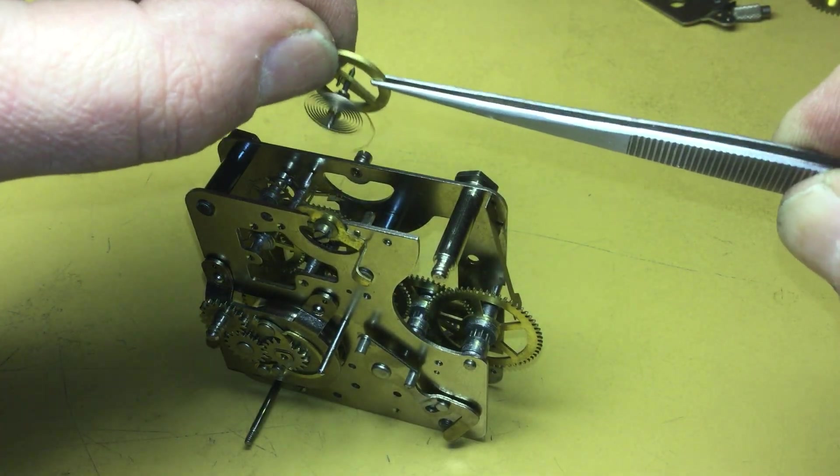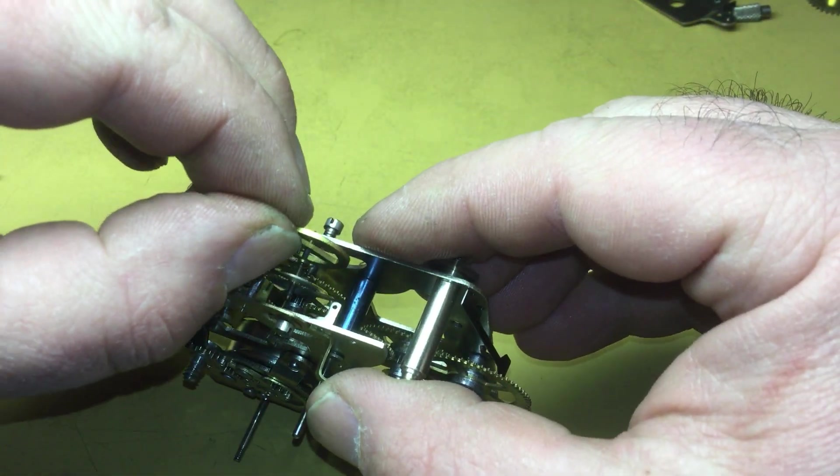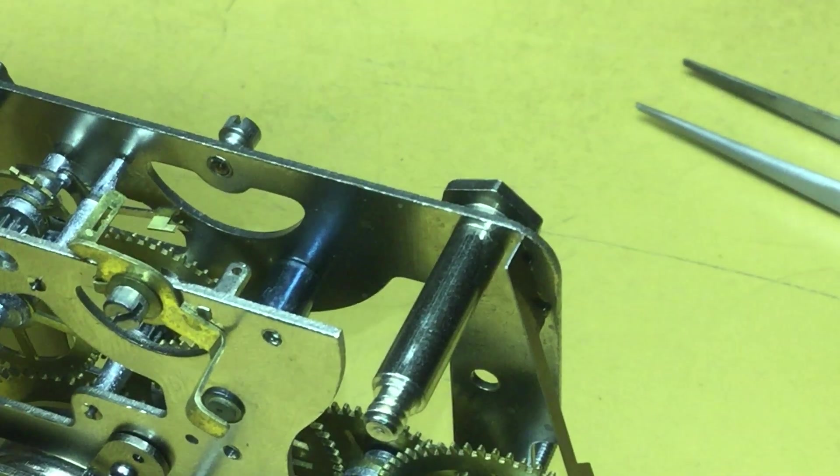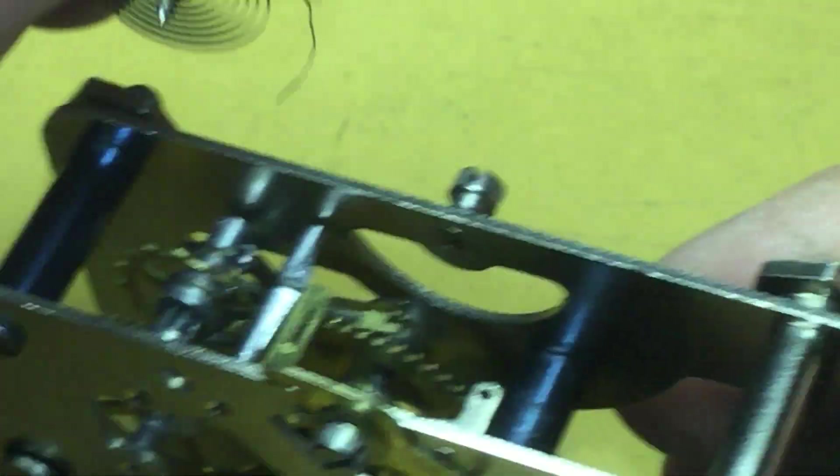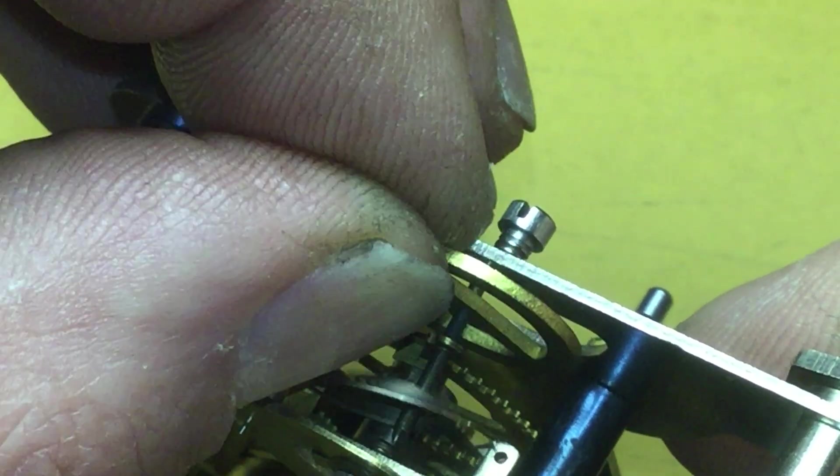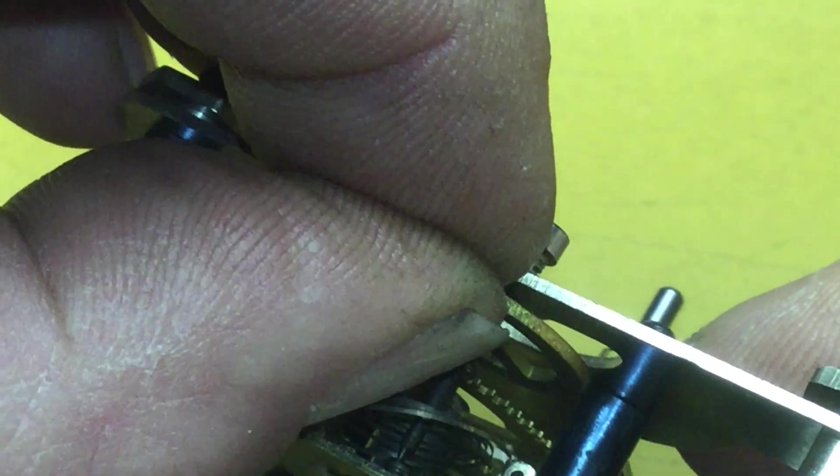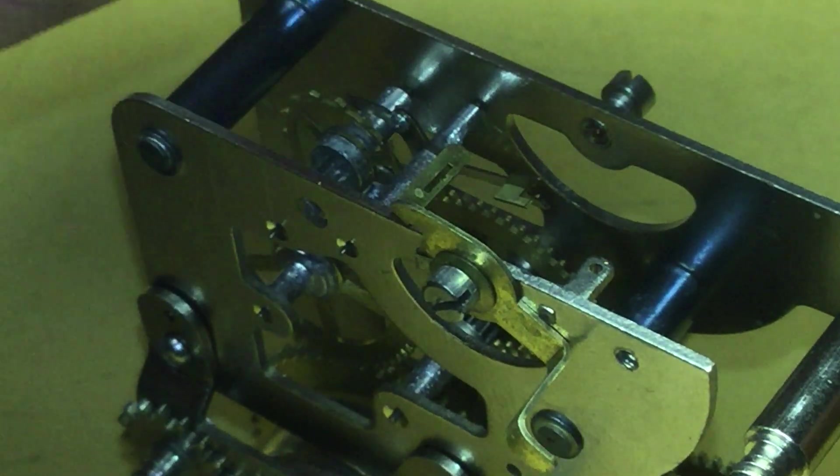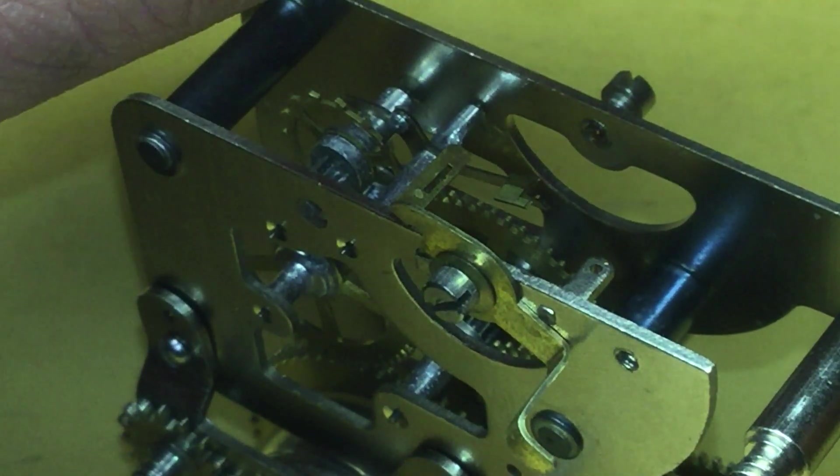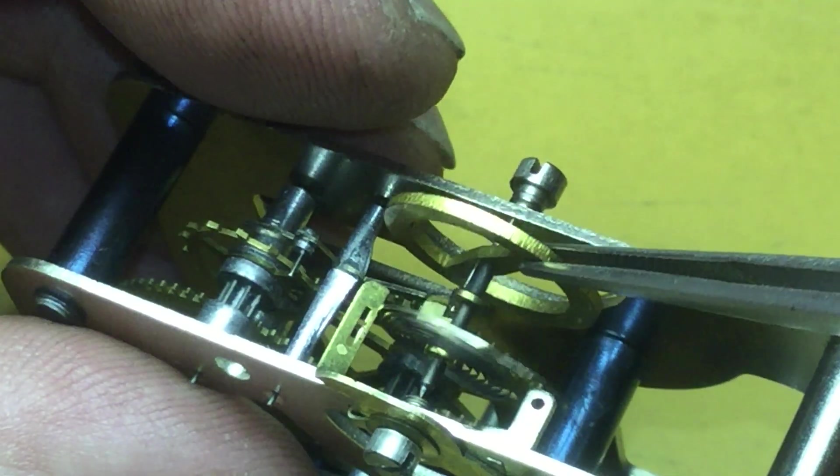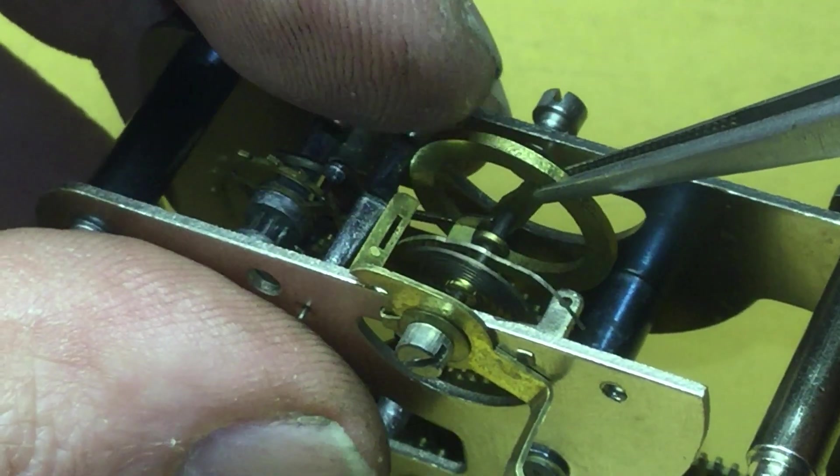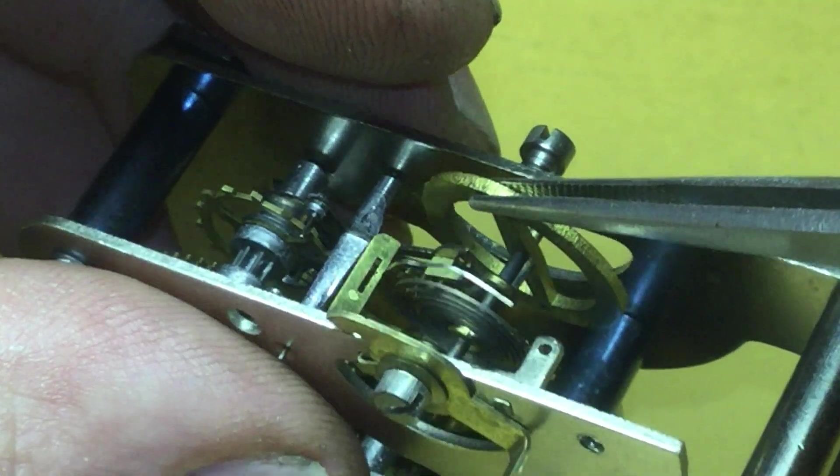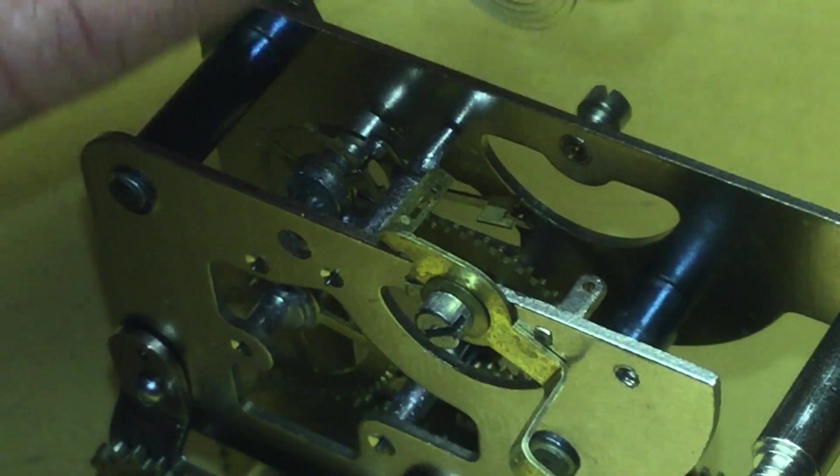Using the tweezers there to help pick up the balance wheel and get it positioned. Let me zoom in on this. I think you're going to want to see this a little bit better. I might go ahead and use those tweezers. I've done this a couple times without them.